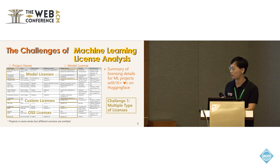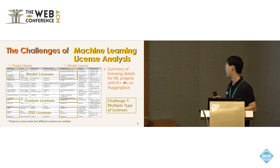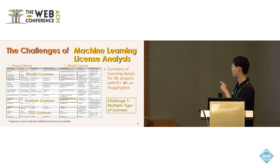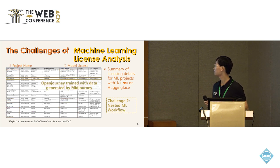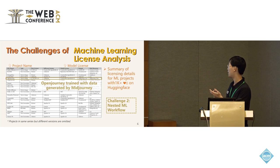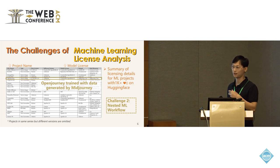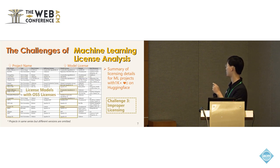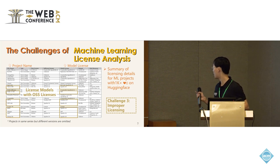For example, Stable Diffusion uses the Creative ML OpenRAIL license, which is a model license. A project like GPT-2 uses a custom license. And a project such as BERT uses the traditional open source software license Apache. For the second challenge, the project OpenJourney was trained with data generated by Midjourney, which means there is a dependency relation between these projects. And the Falcon project uses an open source software license, while BERT uses Apache.